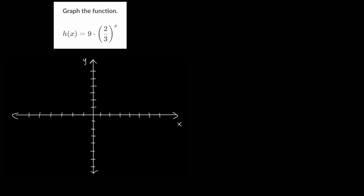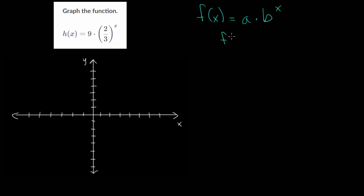Let's continue talking about graphing exponential growth and decay functions. Remember the general form: f(x) = a · b^x. The a value is the starting value, since plugging in 0 gives b^0 = 1, and 1 times a is just a. The b value is the base — the number you multiply by to go from one value to the next as x increases by 1.